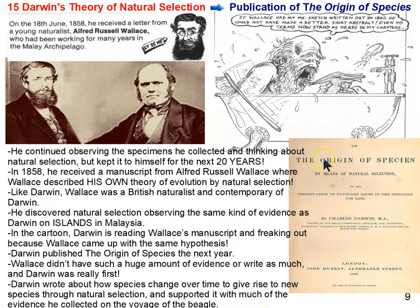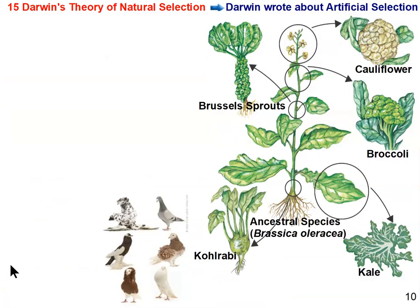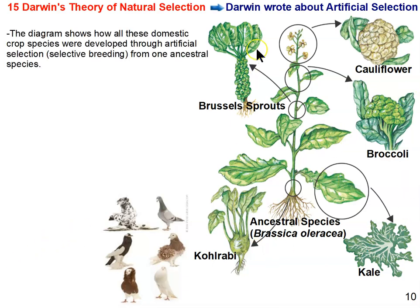This is an image of the first page of On the Origin of Species. One of the things Darwin wrote about to support the idea of natural selection is something he was very familiar with: artificial selection. For example, Brussels sprouts, cauliflower, broccoli, kale, and kohlrabi were all created through selective breeding, which can be considered artificial selection.